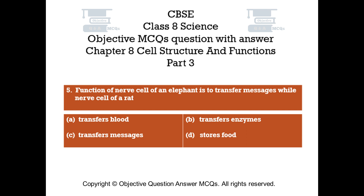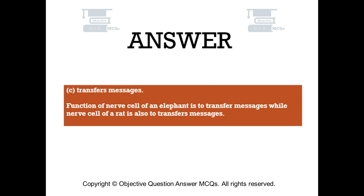Question number 5: The function of the nerve cell of an elephant is to transfer messages; while the nerve cell of a rat — Option A: Transfers blood, Option B: Transfers enzymes, Option C: Transfers messages, Option D: Stores food. The right answer is Option C: Transfers messages. The nerve cell of a rat also transfers messages.